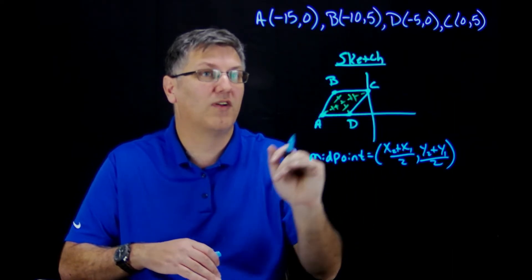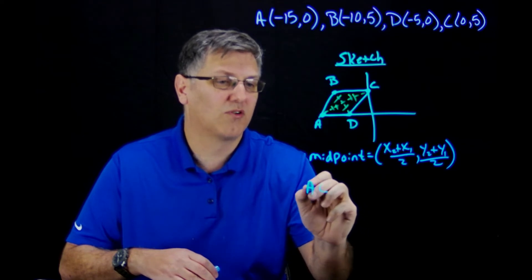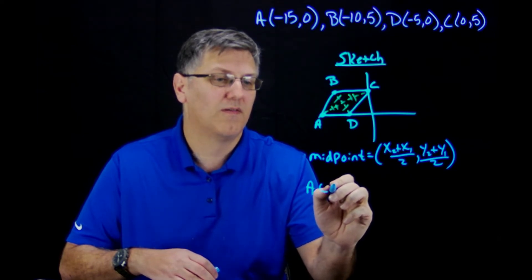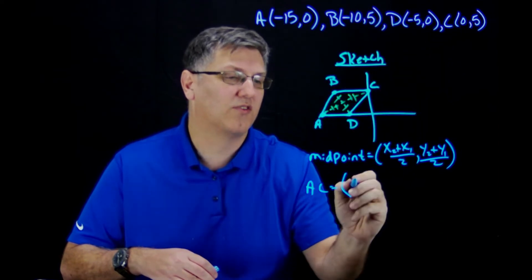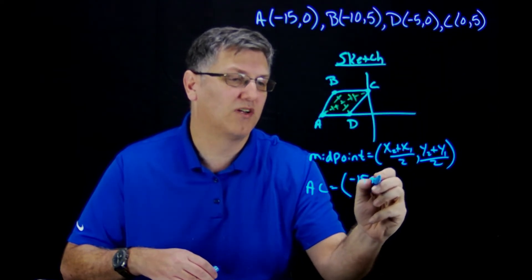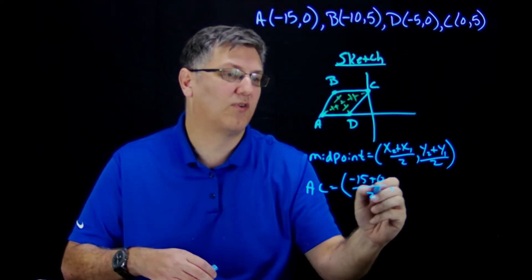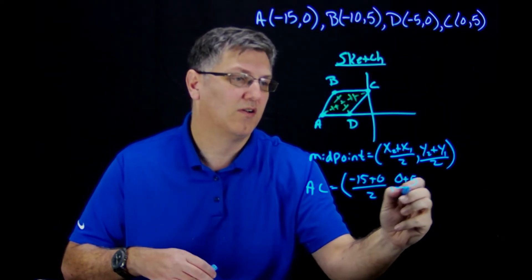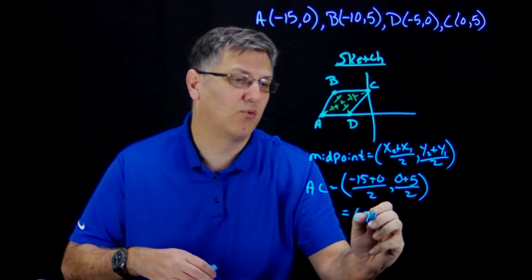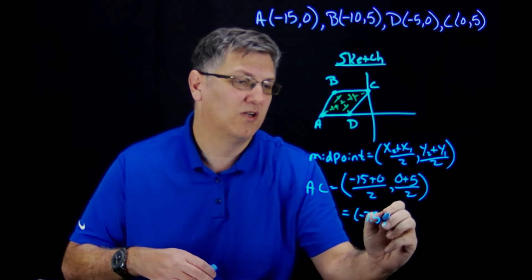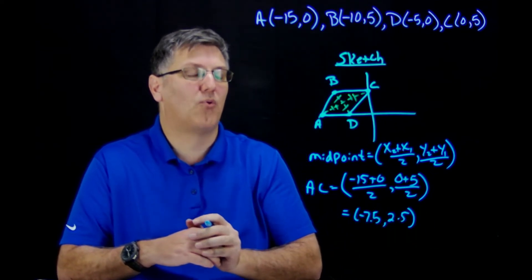Let's find the midpoint of AC. We're going to take the average of the x's: negative 15 plus 0 divided by 2, comma, 0 plus 5 divided by 2. When I do this math, I get negative 7.5, comma, 2.5. So that is the midpoint of AC.